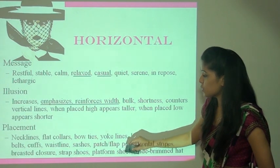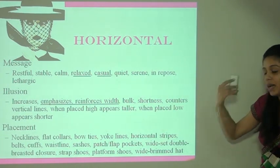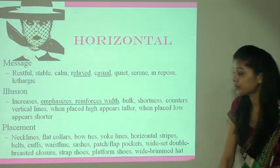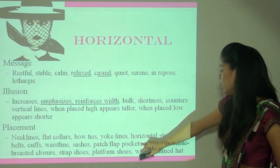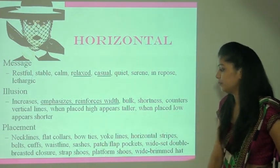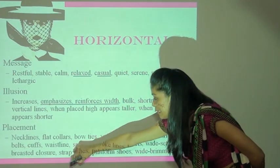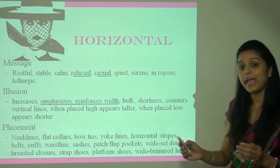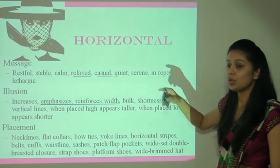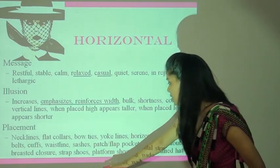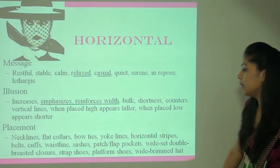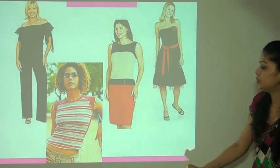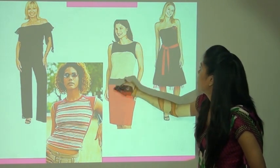Placements for horizontal lines — necklines, flat collar, bow tie, yoke lines, horizontal strips, belts, cuffs, waistlines. Kisika kamar wala area bahut thin hai ya waha se bahut wide nahi hai — agar wahan hum waistline use karein with horizontal strips, so jo area hai woh wide lagega. Also: sashes, patch flap pockets, double-breasted closures, strap shoes, platform shoes, wide brim hats. These are the horizontal lines — they give a calm look.